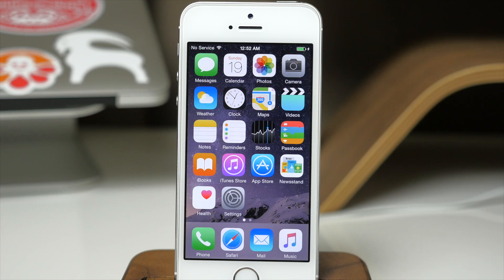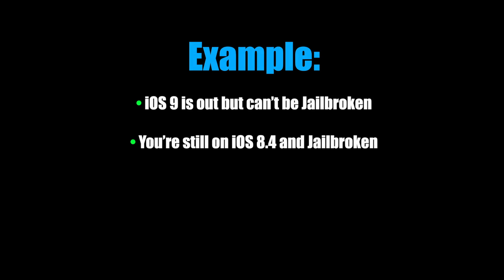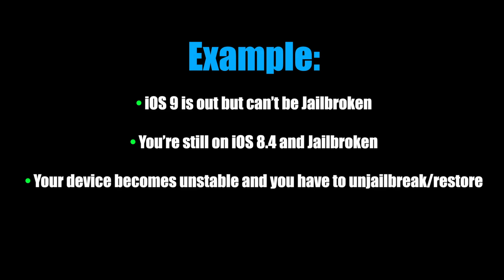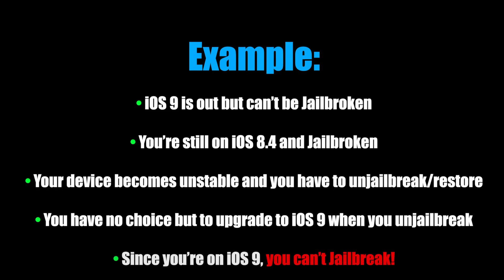If you aren't aware, any time that you un-jailbreak your device, you're forced to upgrade to the latest firmware, which very possibly might not be able to be jailbroken. For example, let's say that iOS 9 is officially out but it can't be jailbroken. Now let's say we're on iOS 8.4 and we're jailbroken, then something goes wrong with your device and it's unstable and we have to un-jailbreak and restore. Well usually this means you're going to have to upgrade to iOS 9, which means you can no longer jailbreak because you can't downgrade.